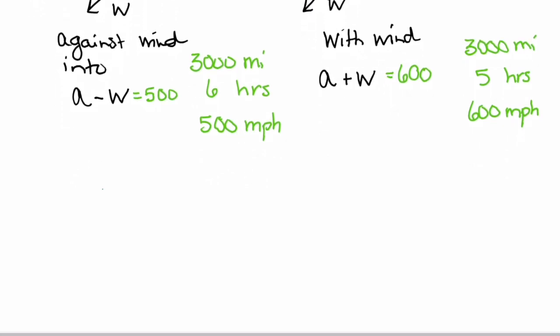Now let's put these equations together. We have airplane speed minus wind speed is 500 miles per hour, and the airplane speed plus the wind speed is 600 miles per hour. Notice that the w's, our wind speed, has opposite signs. So if we use the elimination method and add these equations together, the w variable will cancel out.